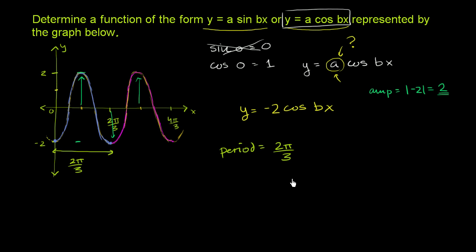And given that the period here is 2 pi over 3, can you figure out what b is going to be? Well, the period of this is going to be equal to 2 pi over the absolute value of b.